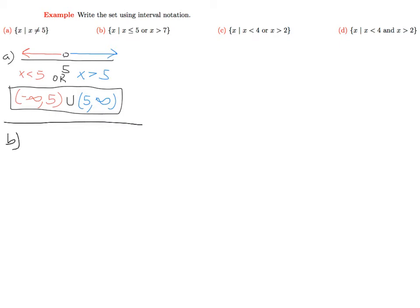In part B, similarly, let's write this out on a number line. Here we have 5, and here we have 7. We want to take all values that are less than or equal to 5.